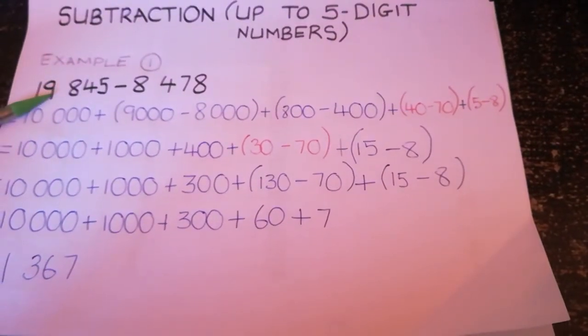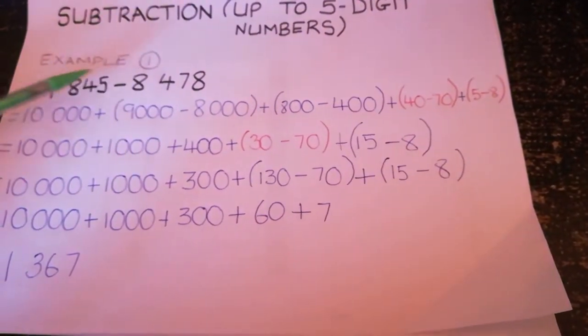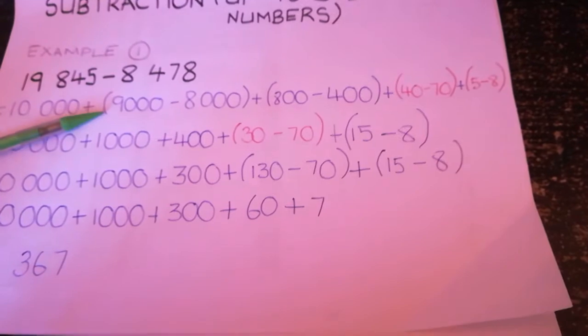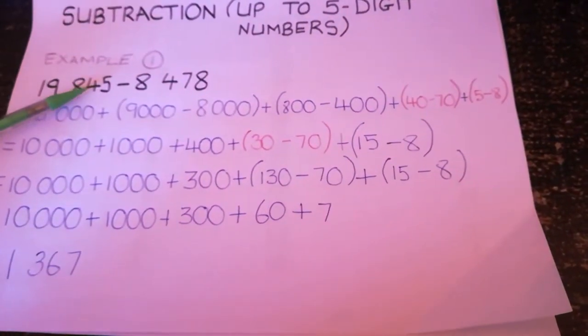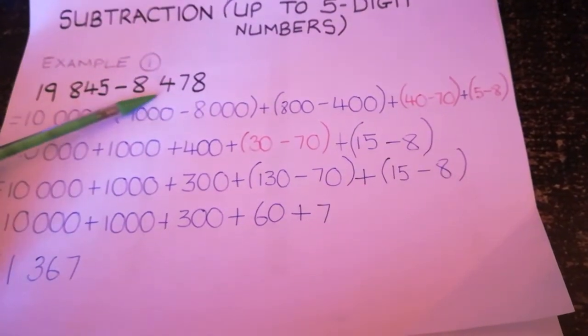Let's look at our thousands column. Here we have 9,000, here we have 8,000, so we say 9,000 minus 8,000. Plus, in our hundreds column, 800 minus 400.